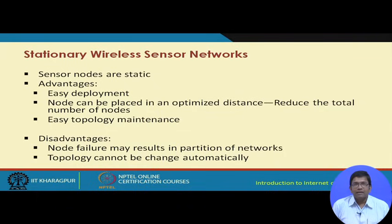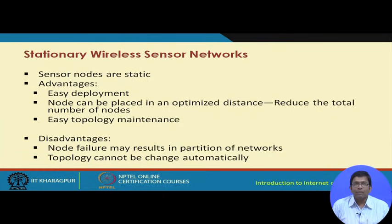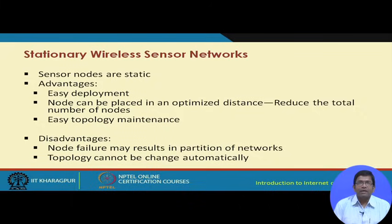The disadvantage is that if there is a failure in the static sensor network, it is likely that that point of failure can partition the network into two or more fragments. This is particularly likely if it is a critical node — one part of the network will not be able to communicate with another part. Also, the topology cannot be changed automatically, which is another disadvantage.